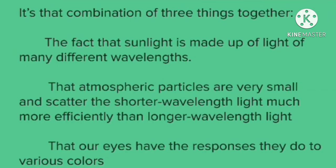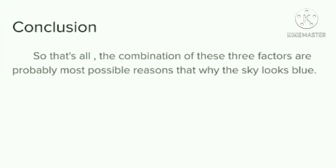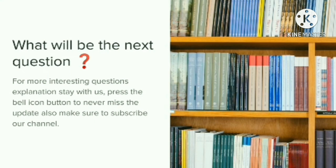It's a combination of three things put together: first, the fact that sunlight is made up of light of many different wavelengths; second, the atmospheric particles are very small and scatter the shorter wavelengths much more efficiently than the longer wavelengths; and third, our eyes respond to various colors. That is what makes the sky appear blue to human eyes. If we could see into the ultraviolet very efficiently, the sky would likely appear more violet or even ultraviolet. And if we only had two types of cones, like dogs do, we could still see the blue sky during the day.